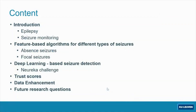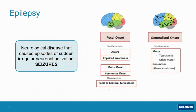This is the main overview of the presentation. I will give you a brief introduction about the problem and what epilepsy is. Then I will break the presentation into two main parts: feature-based algorithms, which used to be the state of the art in machine learning, and how they are being used to detect different types of seizures. I will go into deep learning approaches, give examples about trust scores and data enhancement to improve label quality, and finish with future research questions we are currently exploring.